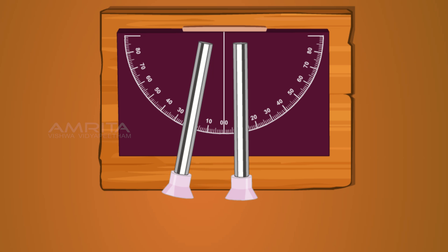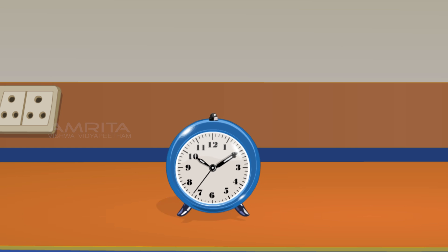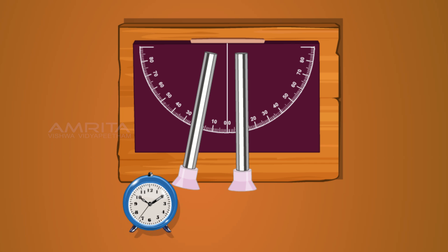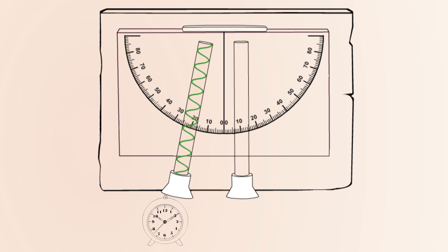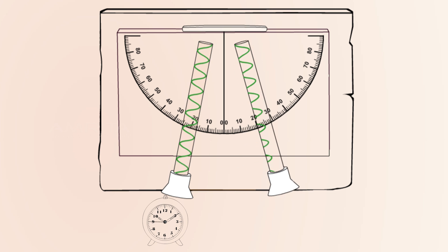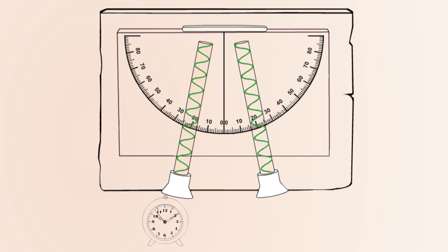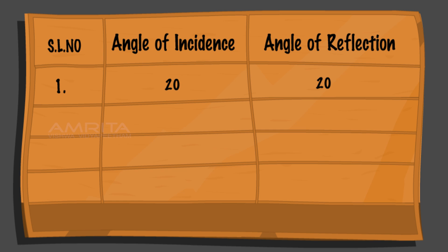Move the lower end of tube one towards the left at an angle of 20 degrees on the protractor. Now position a timer at the mouth of tube one. You can hear sound waves passing through tube one. Move the lower end of tube two to catch the sound waves from tube one. Once the maximum volume is obtained through tube two, fix the tube at that angle. Note the angle of incidence and angle of reflection. Both are 20 degrees.